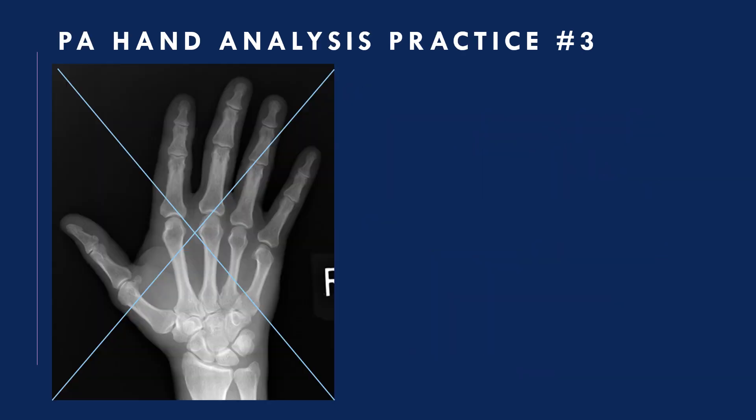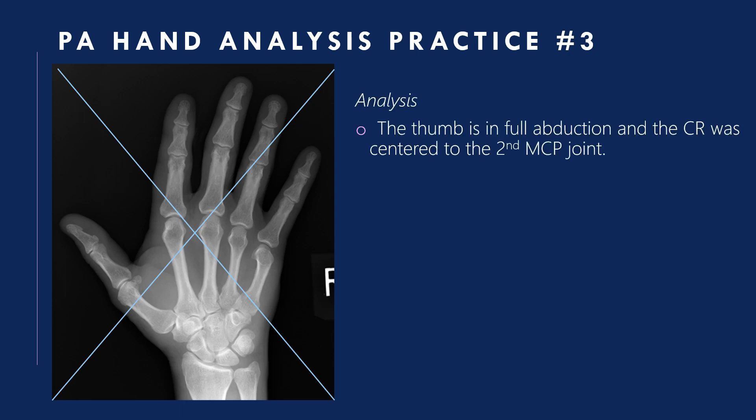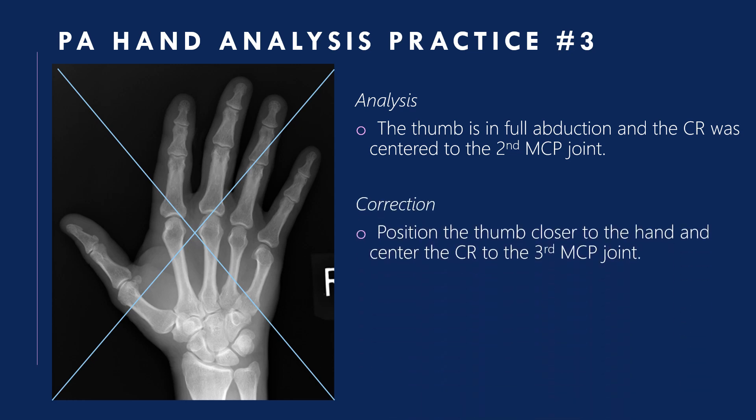PA hand analysis practice three: the thumb is in full abduction and the CR was centered to the second metacarpophalangeal joint. Correction: position the thumb closer to the hand and center to the third metacarpal joint.